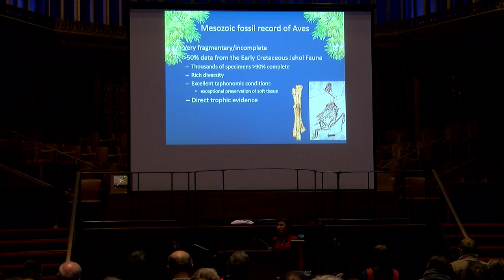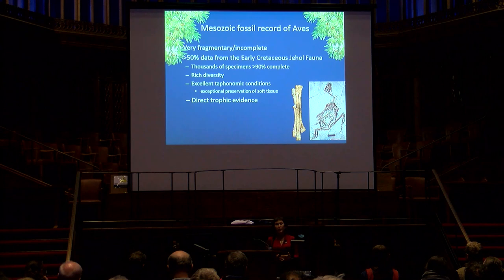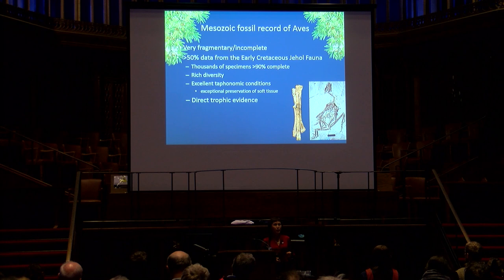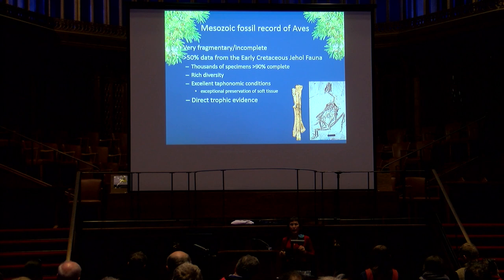The avian fossil record in the Mesozoic is extremely fragmentary, because birds are typically small animals that have hollow bones and so they don't survive the processes of taphonomy very well. However, if you're familiar with the Jehol biota, you know that it provides a taphonomic window into the biology of Aves, and there are thousands and thousands of specimens that allow us to explore this avian fauna in extreme detail.